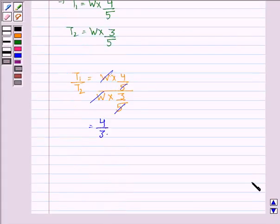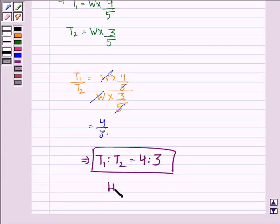So T1 is to T2 is 4 is to 3. This is what we were supposed to prove in this question. I hope that you understood the solution and enjoyed the session. Have a good day.